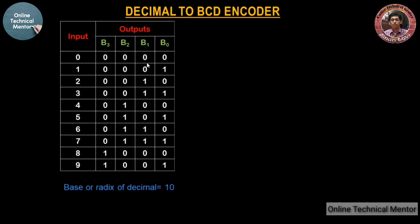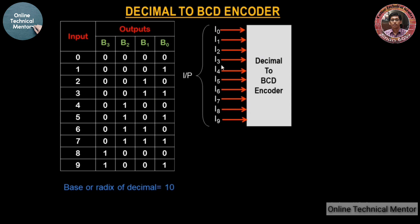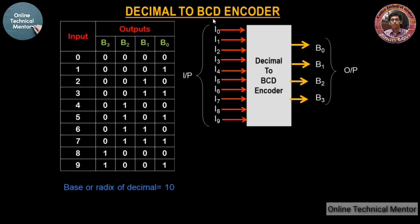Here you have to design an encoder circuit where each decimal digit is converted to its corresponding BCD. This decimal to BCD encoder has 10 inputs labeled i0 through i9, and 4 outputs: b0, b1, b2, and b3. For an encoder with 4 outputs, there can be up to 2 to the power 4 = 16 inputs, but we only require the first 10 and ignore the rest.